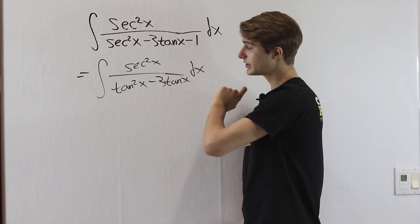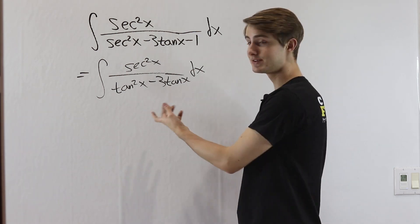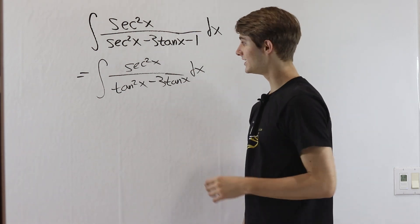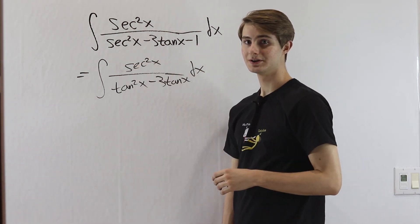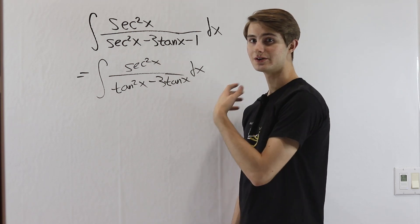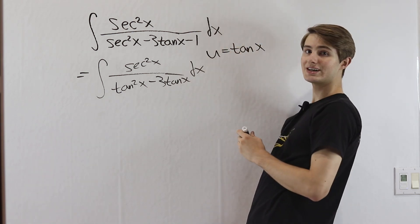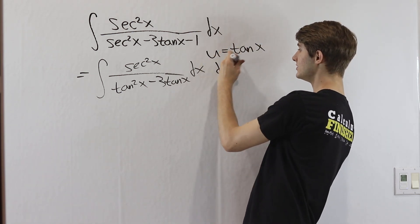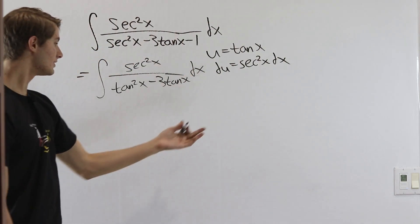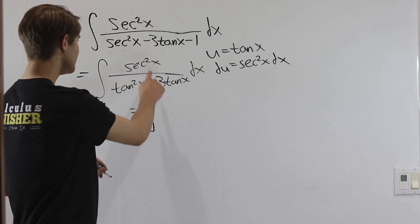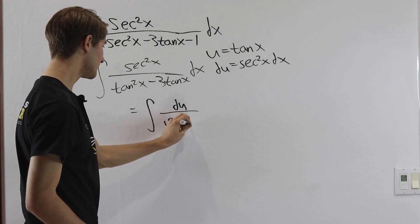Now we might start looking at more trig identities to apply in the denominator but before we do that we should take a step back and look at this integral with a fresh set of eyes. We have tangent x in the bottom and we have secant squared x in the top which means this is actually a very nice example of u substitution. If we substitute u equals tangent x we know that du is going to be secant squared x dx and therefore we can plug all this into our integral and give us secant squared x dx is du and then divided by u squared minus 3u.